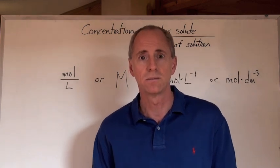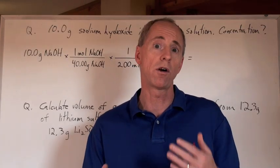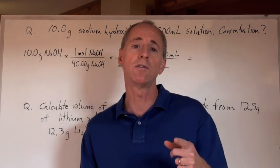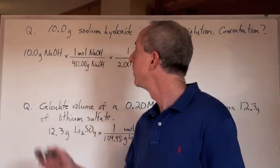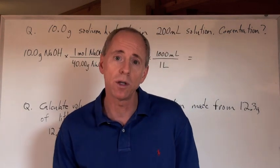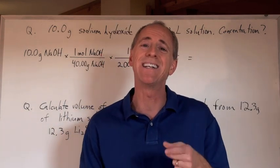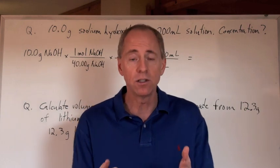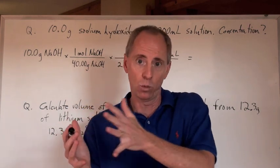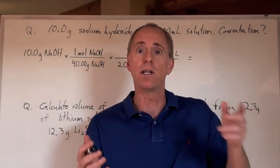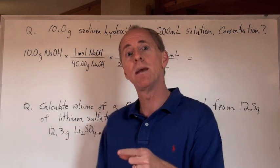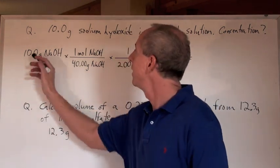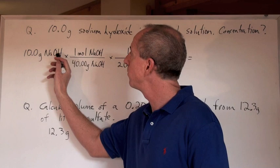Let's do some calculations. Let's do some questions where our understanding of concentration — being moles of solute divided by liters of solution — comes into play. You've got 10.0 grams of sodium hydroxide in a 200 milliliter solution. What's the concentration? What I like to do is start with that mass and work my way through using unit cancellation. So here's how it goes — you've got 10.0 grams of NaOH.